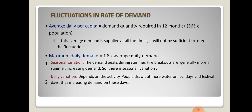Coming to fluctuations in the rate of demand: fluctuations means changes or variations in the rate of demand. The average daily per capita demand is equal to the demand quantity required in 12 months divided by (365 × population). If this average demand is supplied at all times, it will not be sufficient to meet fluctuations. Fluctuations may arise due to three reasons: seasonal variation, daily variation, and hourly variation.